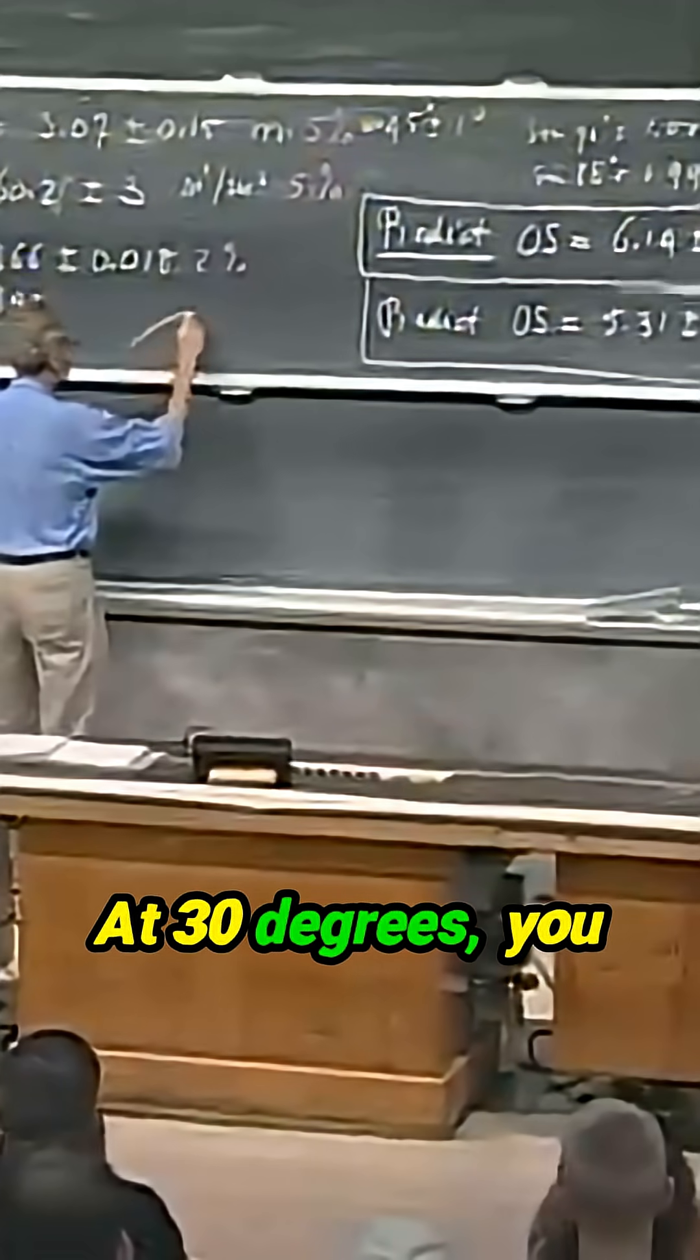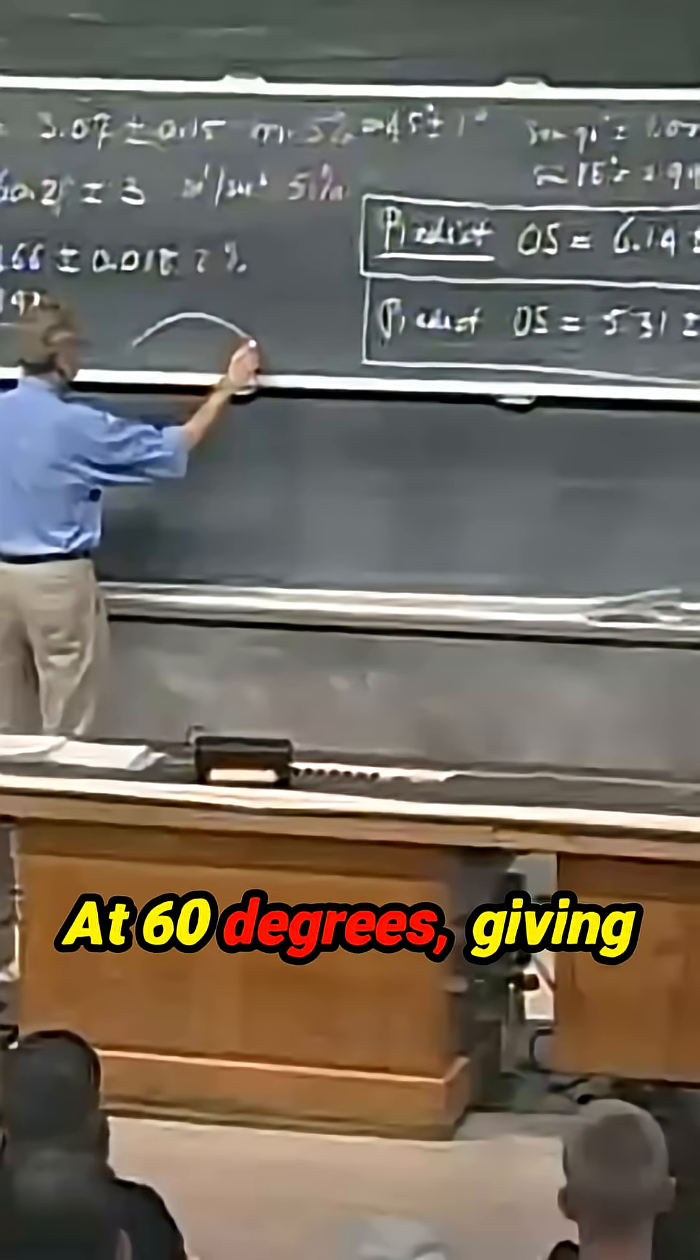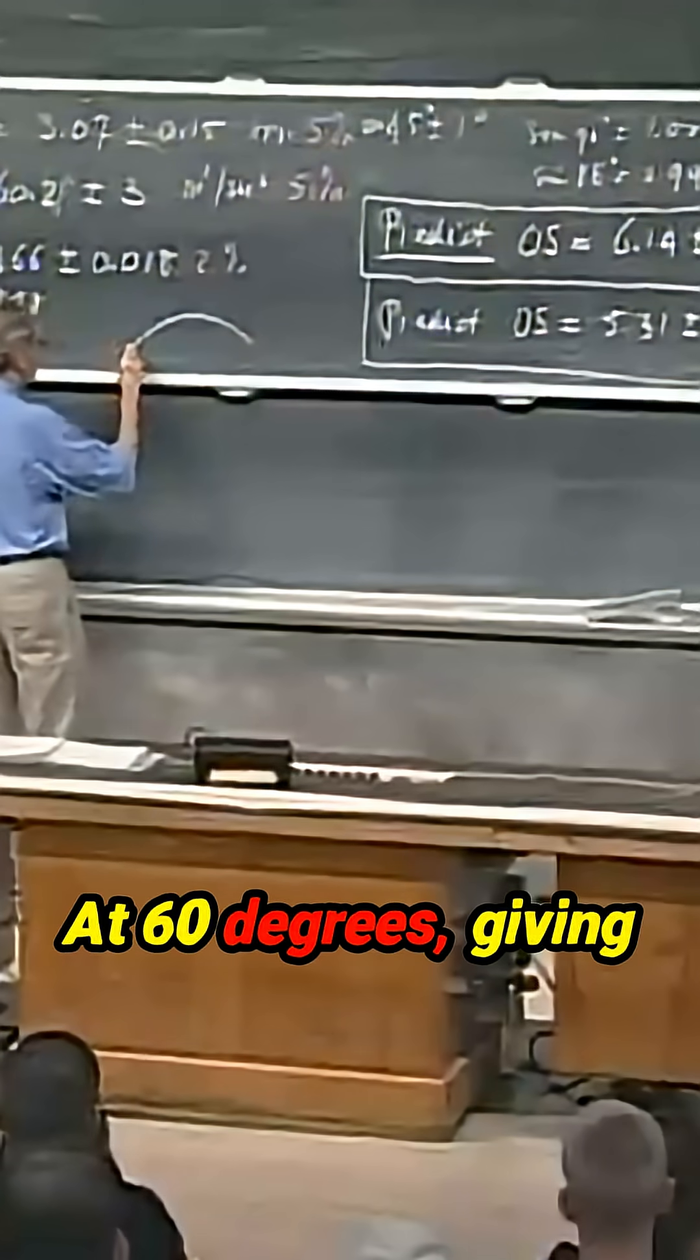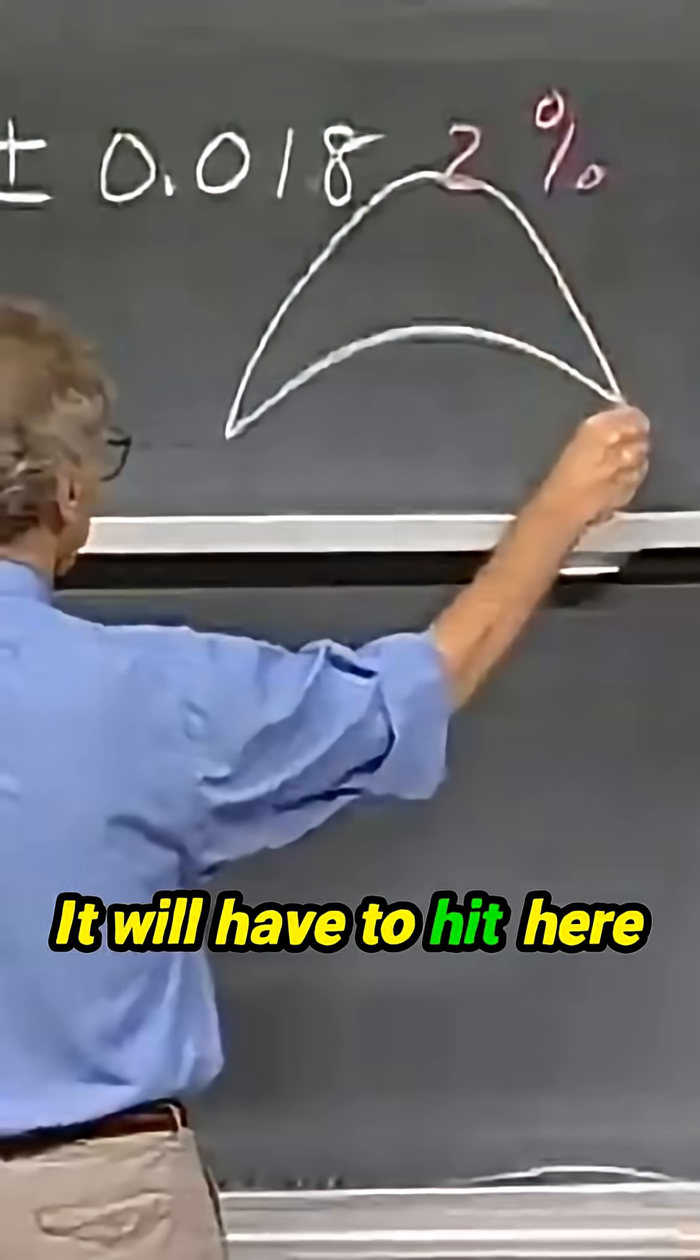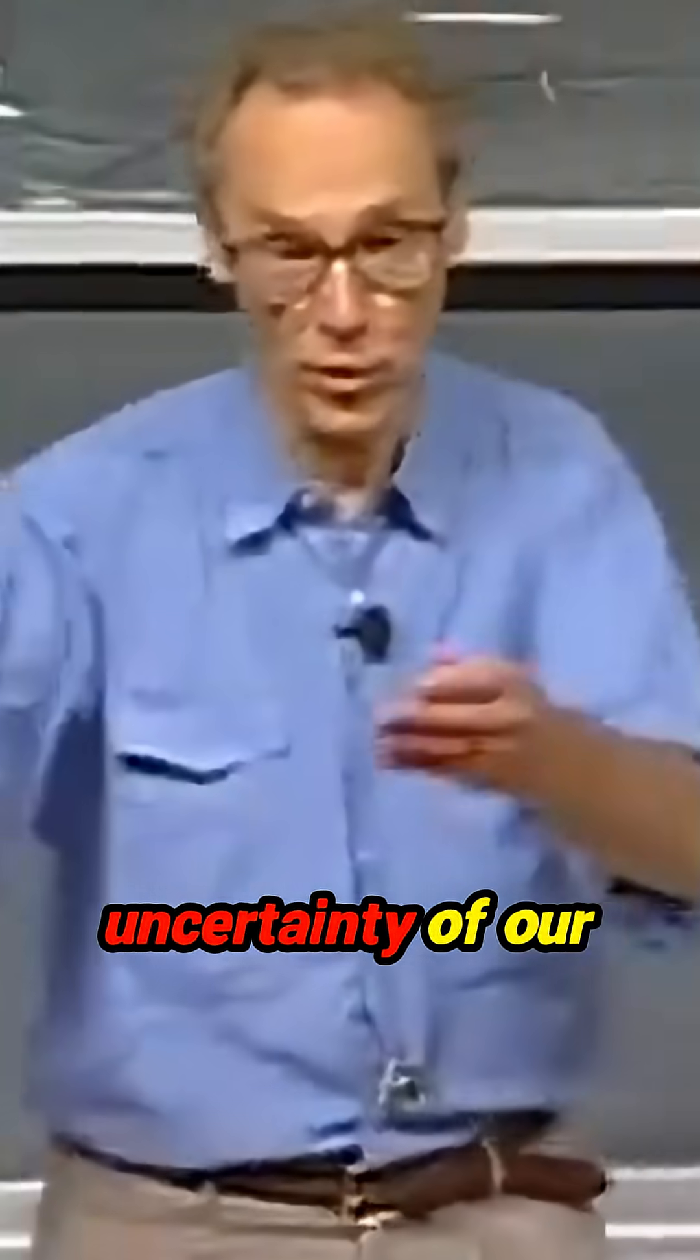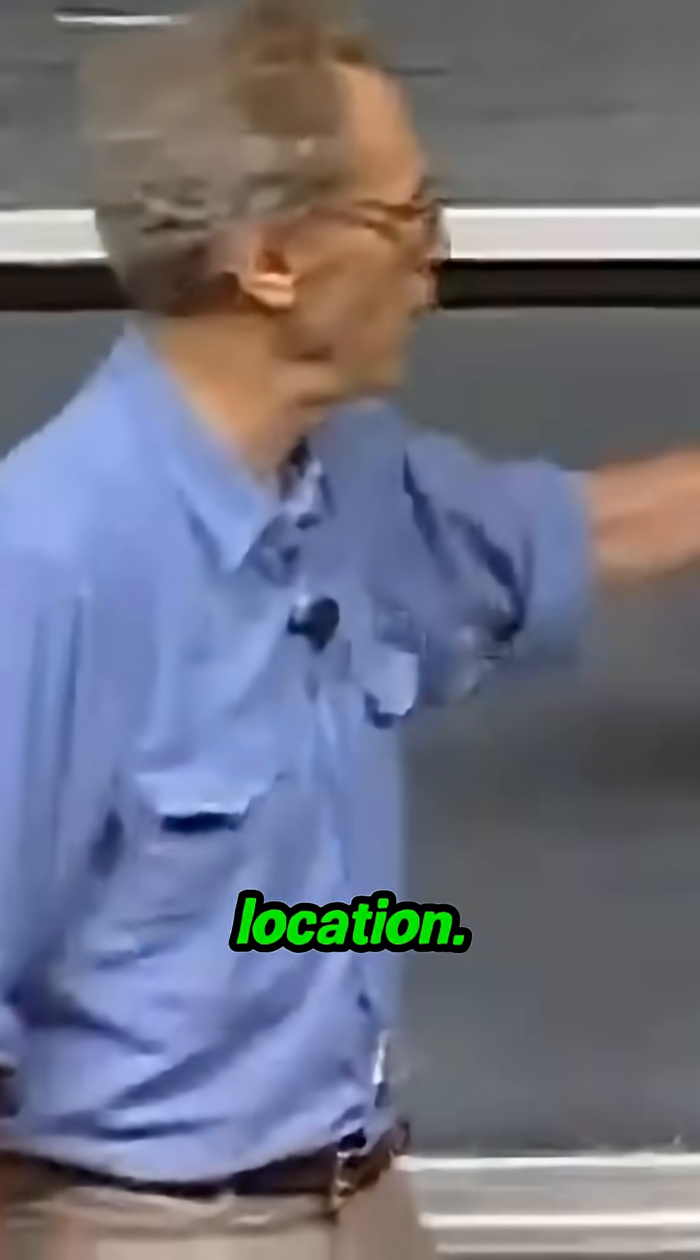At 30 degrees, you saw this. At 60 degrees, giving it the same initial speed, you will see this. It will have to hit here within the uncertainty of our measurements at the same location.